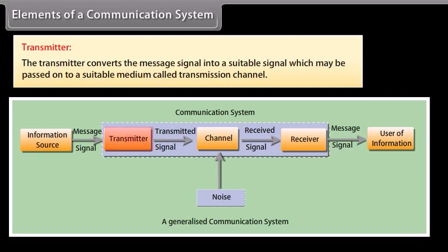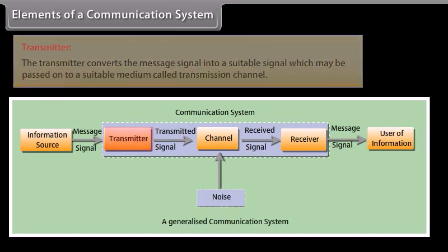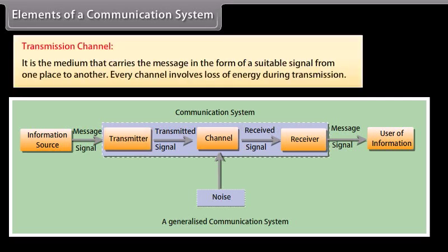The transmitter converts the message signal into a suitable signal, which may be passed on to a suitable medium called the transmission channel. The transmission channel is the medium that carries the message in the form of a suitable signal from one place to another.